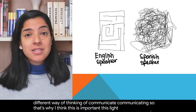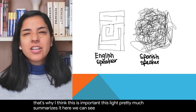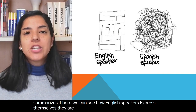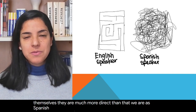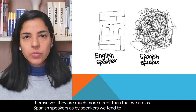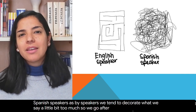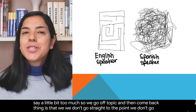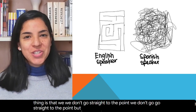This slide pretty much summarizes it. Here we can see how English speakers express themselves. They are much more direct than we are as Spanish speakers. As Spanish speakers we tend to decorate what we say a little bit too much, so we go off topic and then come back. We don't go straight to the point, but we should.